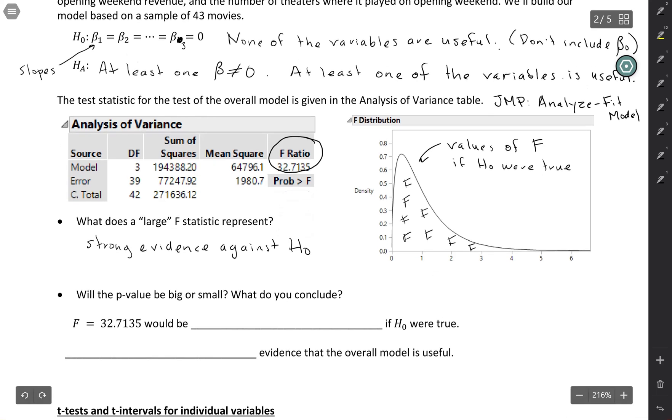So in this case, what we're seeing from this distribution is that this F statistic would actually be extremely unlikely to occur if the null hypothesis were true. It's like off the chart on that sampling distribution. It would be extremely unlikely. And so if it's extremely unlikely, then that's saying that we would have a small p-value, because the p-value measures how likely it is to get a statistic like this if the null were actually true.